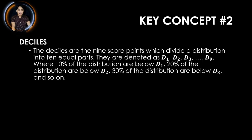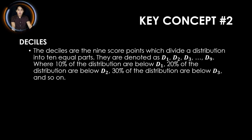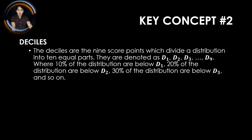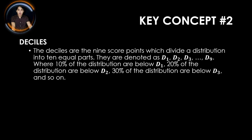Our key concept number two is the deciles. The deciles are the nine score points which divide a distribution into ten equal parts. They are denoted as D sub 1, D sub 2, D sub 3, up to D sub 9, where 10% of the distribution is below D sub 1, 20% is below D sub 2, 30% is below D sub 3, and so on.